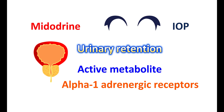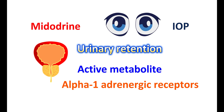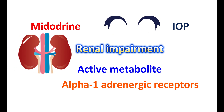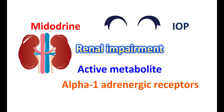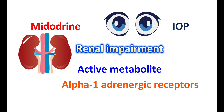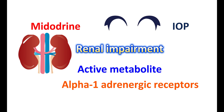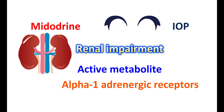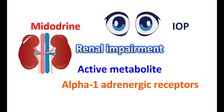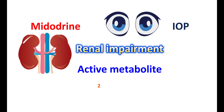In diabetic people, this medication should be used carefully. In case of renal impairment, Midodrine should be used at a low dose because its safety is not completely established in such patients. The active metabolite is mainly eliminated through the kidneys, so in people with reduced renal function, it may accumulate and produce variable blood pressure effects. Therefore, in people with renal impairment, it should be started at 2.5 mg, and renal function should be properly assessed before starting therapy.